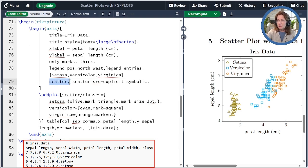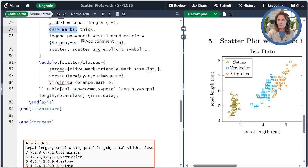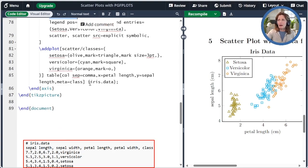So one thing that's different is we add these two options to the axis. Scatter and scatter source equals explicit symbolic. So the explicit symbolic tells it that we're going to give a set of actual classes that are represented by symbols, in this case, words. Notice that I also have only marks. You'll need that somewhere in your option as well. And then when I do the addplot command, I'm reading the file iris.data, and it has a column named class. And that's going to be my meta. So I'm going to use that column for my meta information.